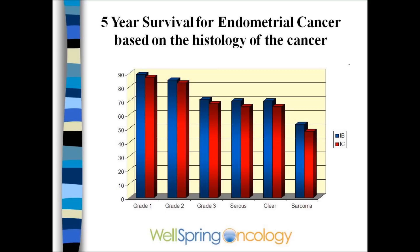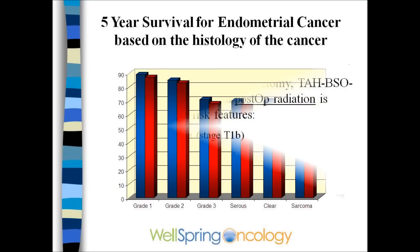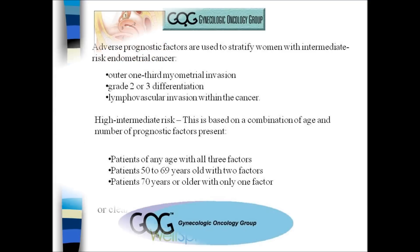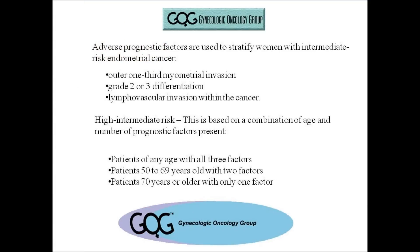Standard treatment for uterine cancer starts with complete surgical removal, including the nodes. The pathology is then reviewed, and decisions are made whether the patient would need only observation, vaginal radiation, pelvic radiation, or perhaps chemotherapy, or a combination. Research by the Gynecologic Oncology Group found that deep muscle invasion, high-grade, or lymphovascular space invasion were important predictors. A young patient needed all three factors, but an older patient — 70 or older — only one factor would put her into a high-risk group, and radiation would be recommended.